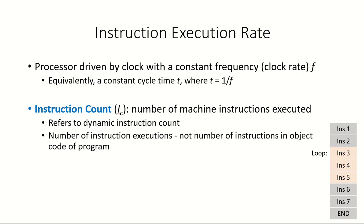When talking about the instruction execution rate, the processor is driven by a clock with a constant frequency or clock rate F, where F is the inverse of the clock cycle time, and the clock cycle time is the inverse of the clock rate. The instruction count refers to the number of machine instructions actually executed — not the number of instructions written in the program.